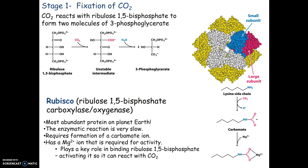The first step is fixation. We take ribulose 1,5-bisphosphate, add our CO2, and this creates a super unstable intermediate that yields two molecules of 3-phosphoglycerate. We add the CO2 to our enzyme to create a carbamate intermediate — remember that carbamates are super energetic and provide energy for reactions to occur.